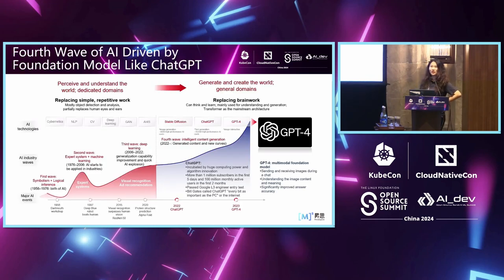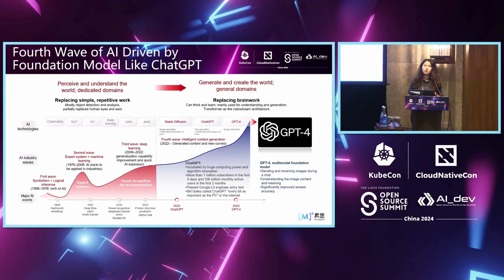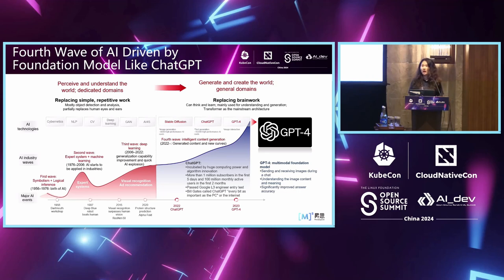We are currently experiencing the fourth wave of artificial intelligence, characterized by the rise of large language models such as ChatGPT and GPT-4. This seems to redefine the role of machine learning and deep learning — from just perceiving and comprehending the world's information in a restricted field, towards generating images, text, and other forms of content in a general domain. These models can also work as assistants with professional knowledge in particular areas, representing a big jump in capability.